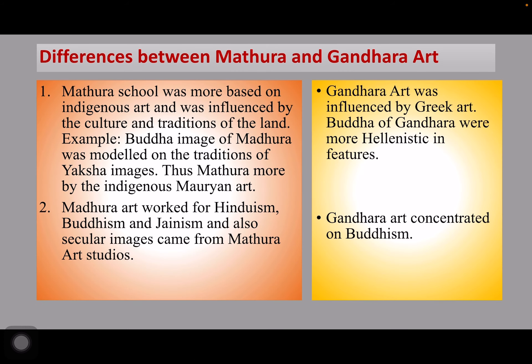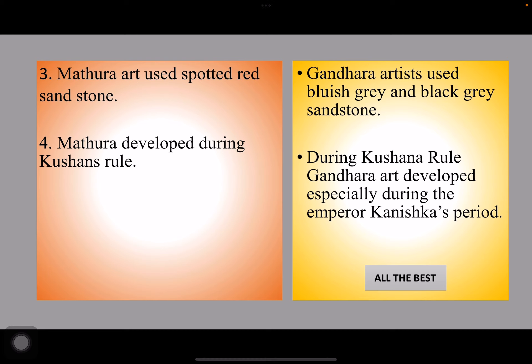Now let us look into the differences between Madhura and Gandhara art. Madhura school was more based on indigenous art and flourished by the culture and traditions of the land. For example, the Buddha image of Madhura was modelled on the tradition of Yaksha images. Thus Madhura art is more of indigenous Mauryan art, whereas Gandhara art was influenced by Greek art and the Buddha of Gandhara was more Hellenistic in features. Second difference: Madhura art worked for Hinduism, Buddhism, and Jainism, as well as secular images, whereas Gandhara art concentrated on Buddhism. Third, Madhura art uses spotted red sandstone as the most popularly used material, whereas Gandhara artists used bluish grey or black grey sandstone. Both Madhura and Gandhara art developed during the Kushan rule.